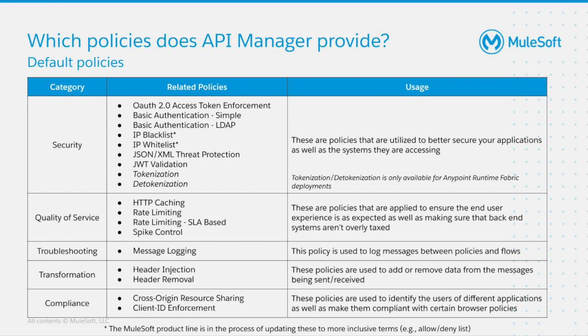Though spike control sounds similar to the rate limiting policy, there is a difference between the two. The spike control policy puts a request onto a queue as it reaches the limit, whereas the rate limiting policy blocks a request from execution once the quota has been reached. The third category is Troubleshooting, where you can use the message logging policy to log custom messages using the information from incoming requests, responses from the backend, or information when other policies are executed.